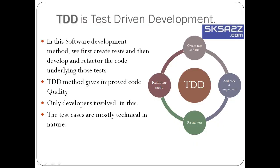First we'll go with TDD — Test Driven Development. In TDD, first we create the test cases and run those test cases to fail the code. Based on this test case, we develop and implement the code, then rerun that test case. If it is successful, we run another test. If not, we change or refactor the existing code and rerun the test. This is a cyclic process.